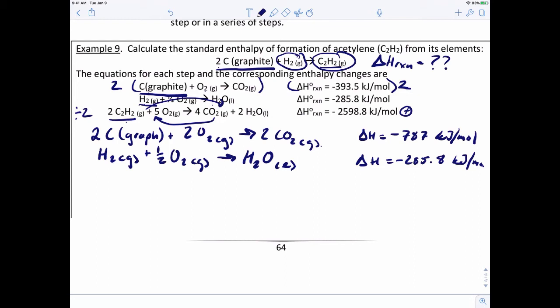So if we divide things by two, let's rewrite that equation. That gives us two moles of CO2 plus one mole of water yields one mole of acetylene and five halves O2.